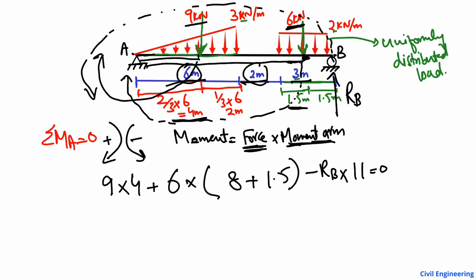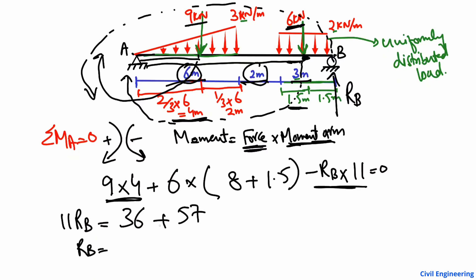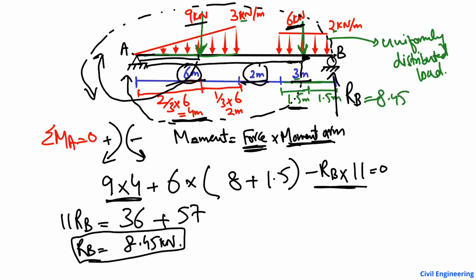Since the sum of all moments about A equals zero, we shift the RB term to the right side: 11 RB = 9×4 + 6×9.5 = 36 + 57 = 93. Dividing by 11 gives RB = 8.45 kilonewtons.